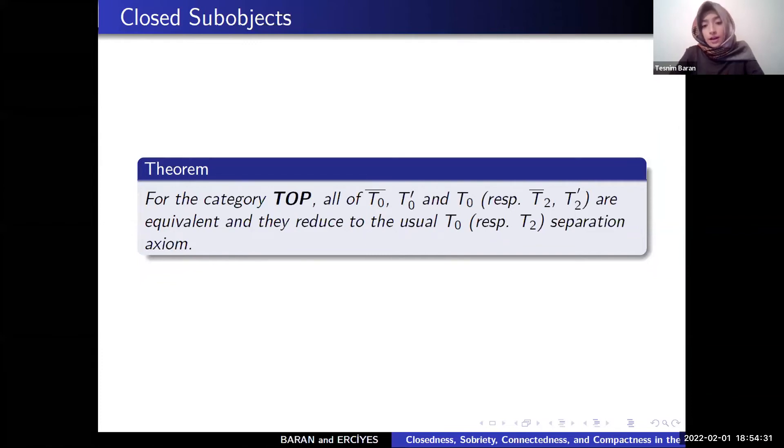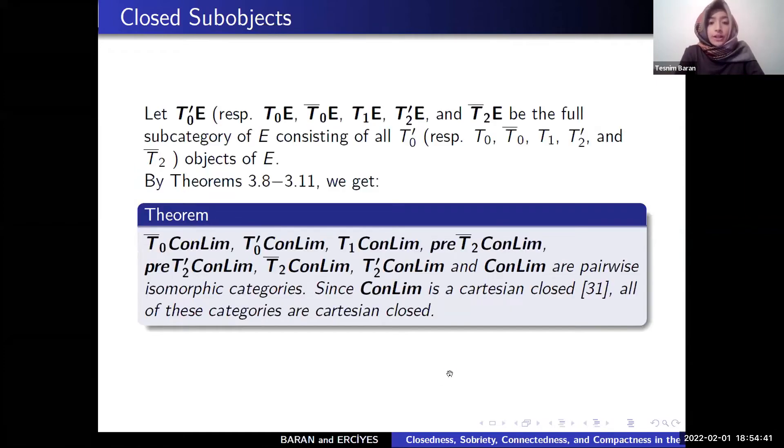For the category top, all of the T0 bar, T0 prime, and T0 are equivalent and they reduce to the usual T0 separation axiom.